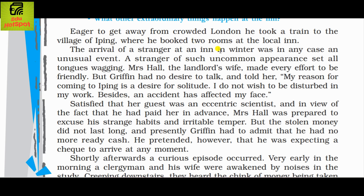The arrival of a stranger at an inn in winter was in any case an unusual event, and a stranger of such uncommon appearance set old tongues wagging. Mrs. Hall, the landlord's wife, made every effort to be friendly, but Griffin had no desire to talk and told her: 'My reason for coming to Iping is a desire for solitude. I do not wish to be disturbed in my work. Besides, an accident has affected my face.' Satisfied that her guest was an eccentric scientist and since he had paid in advance, Mrs. Hall was prepared to excuse his strange habits and irritable temper.